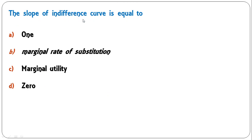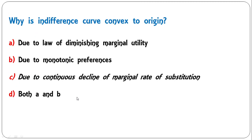Next: 'The slope of the indifference curve is equal to' — one, marginal rate of substitution (MRS), marginal utility, or zero? The slope of the indifference curve equals MRS. Next: 'Why is the indifference curve convex to the origin?' — due to law of diminishing marginal utility; monotonic preferences; continuous decline of marginal rate of substitution; or both A and B? The correct answer is due to the continuous decline of marginal rate of substitution.